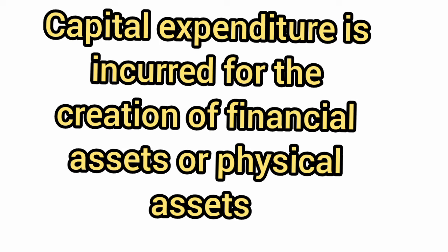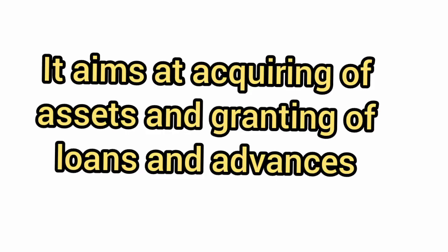Capital expenditure includes purchasing of land, building, and road construction — it is like a one-time investment. First, they are incurred for creation of financial assets or physical assets by the central government. Second, it aims at acquiring assets and granting of loans and advances to state governments for specific purposes.